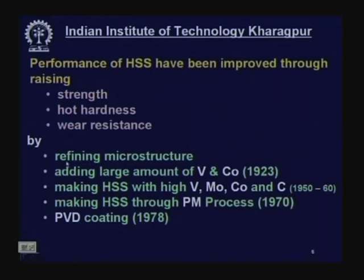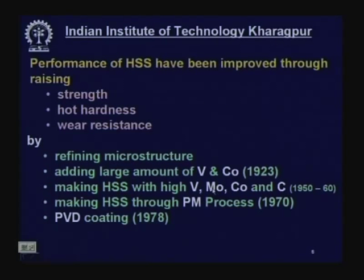High speed steel can withstand temperatures up to 600°C, corresponding to a velocity of around 30 meters per minute. By adding vanadium and cobalt it can withstand higher temperatures and hence higher cutting velocities. Making high speed steel with high vanadium, molybdenum, cobalt, and carbon creates a very good grade for complex cutting tools.